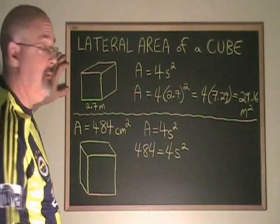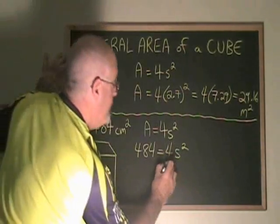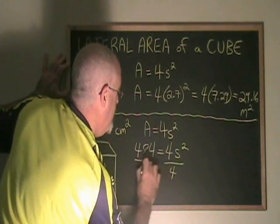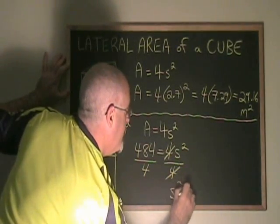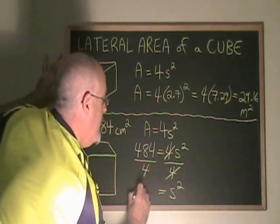We can isolate our variable by dividing both sides by 4. These 4s cancel. And we end up with s squared is equal to 121.